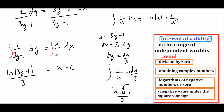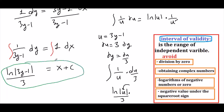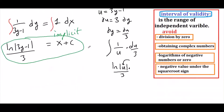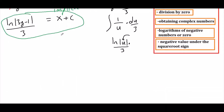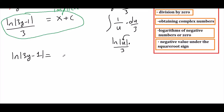Now we have found the implicit solution. We were not given any initial condition, so we are not going to solve for c. But we can find the explicit solution by solving for y. Our first step is to multiply the whole equation by 3, giving ln|3y minus 1| equals 3x plus c. We don't need to manipulate c — we don't need to write 3c or negative c — because in the end we'll just have a constant C.